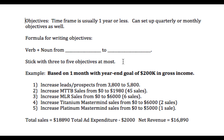Those objectives support your vision statement. For example, this is my example objectives here — this is based on my internet marketing affiliate business that I run. These are one-month goals, with the year-end goal being $200,000 in gross income.